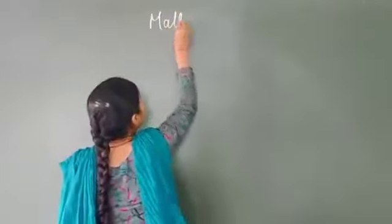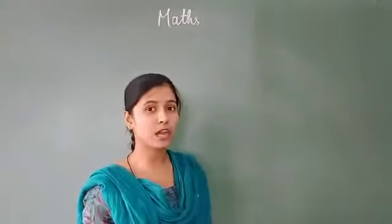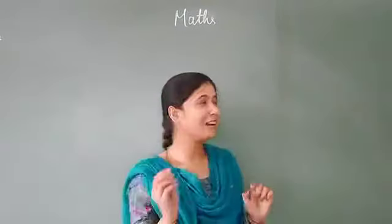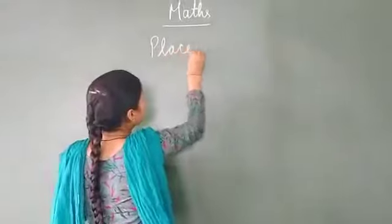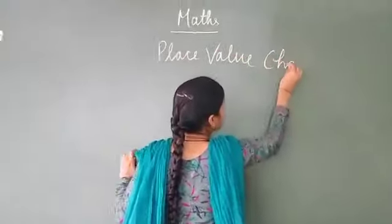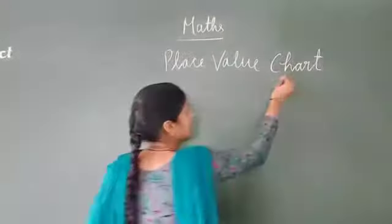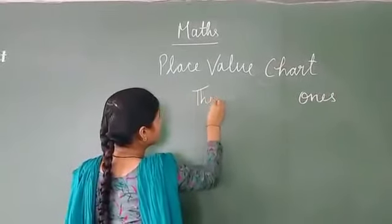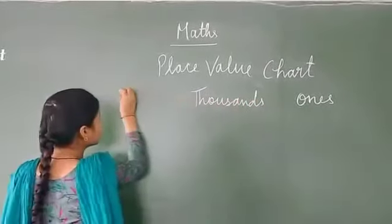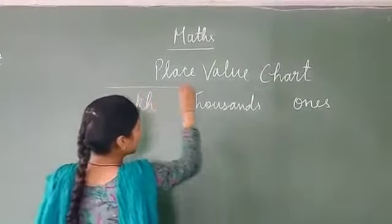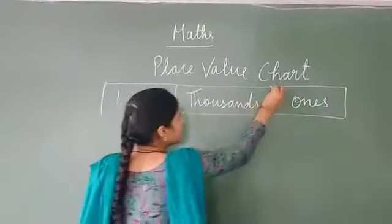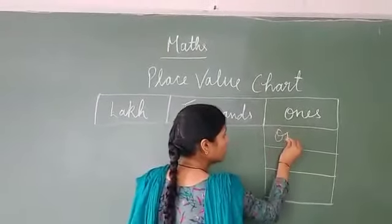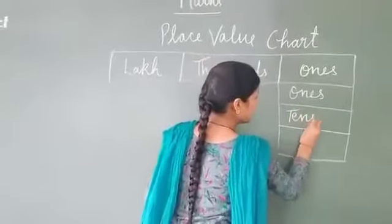Today in math class I am going to explain what is a place value chart. Once there was an old math — his name was place value chart. He has three sons. Once thousand left. He has three children and the names of those three children were ones, tens, and hundreds.